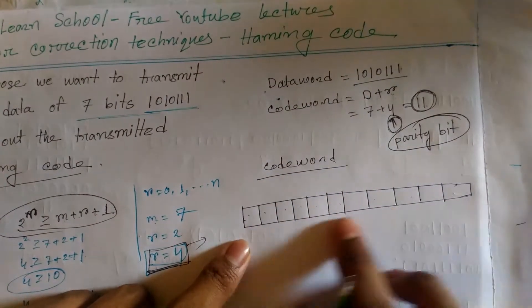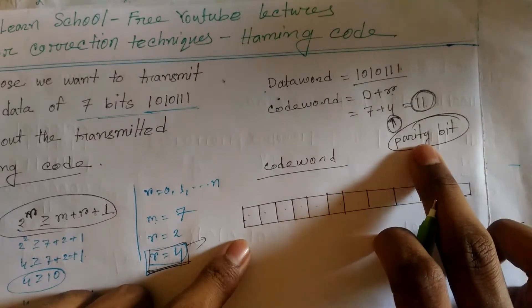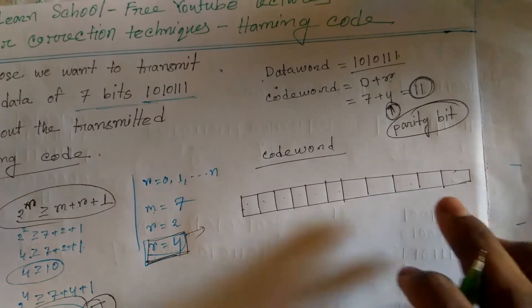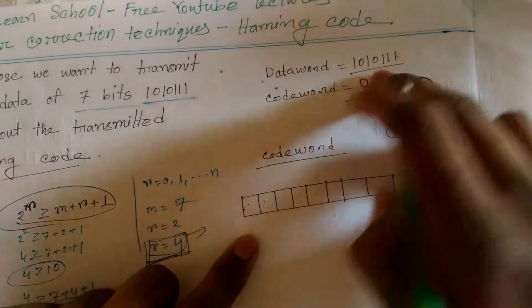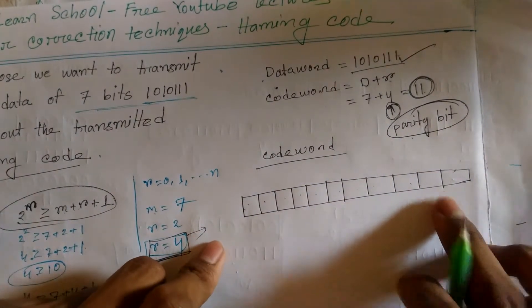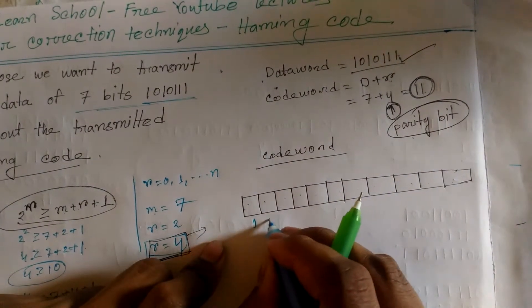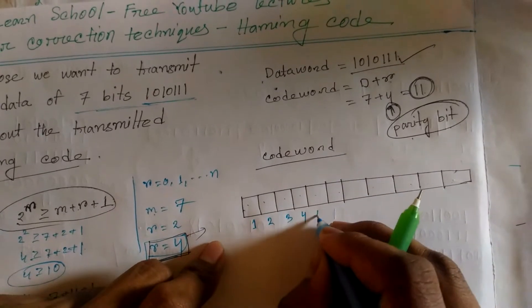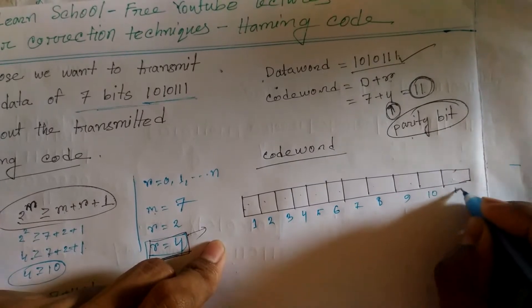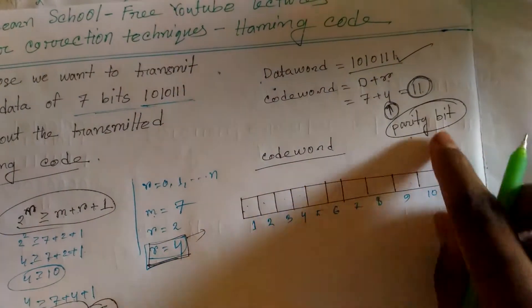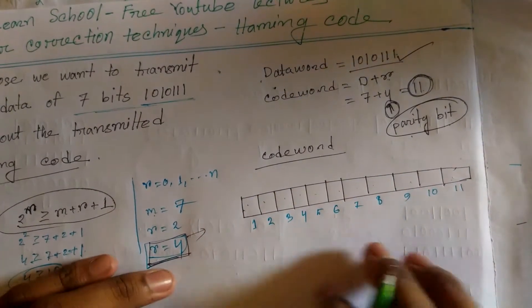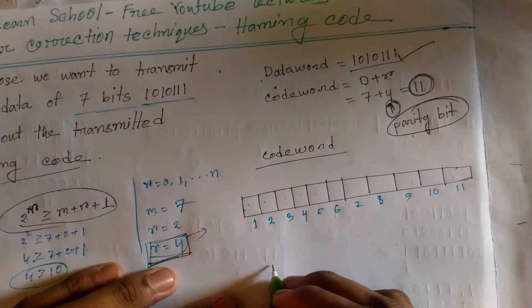Code word position 7. Code word position 6. Code word position 1. Code word position 6. Code word positions 6 and 11. Code word position 8.